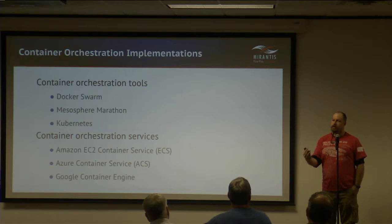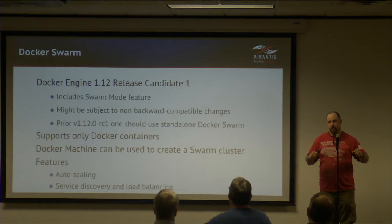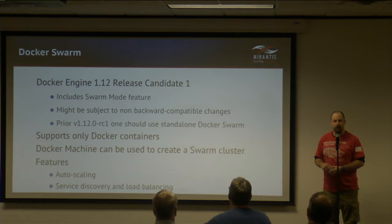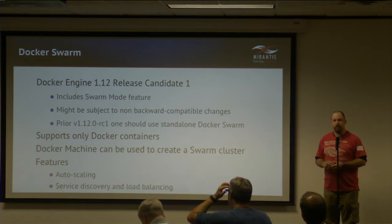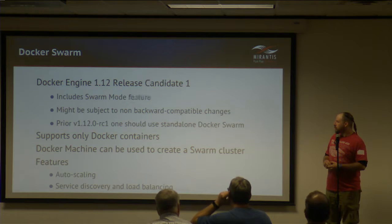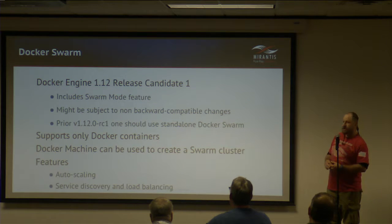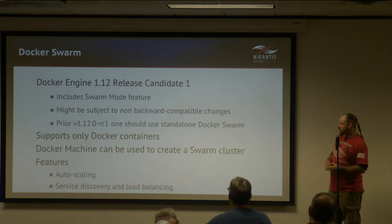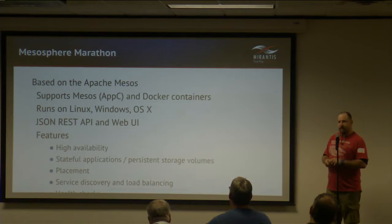Docker Swarm, unsurprisingly, only supports Docker containers. They own the lion's share of the container image market, so they don't feel the need to support alternatives. One challenge with Docker is they don't always maintain backwards compatibility, so stay current with versions. As of this week, version 1.12 release candidate 1 was released. Docker Machine can be used to create a Swarm cluster and handles auto-scaling, service discovery, and load balancing.